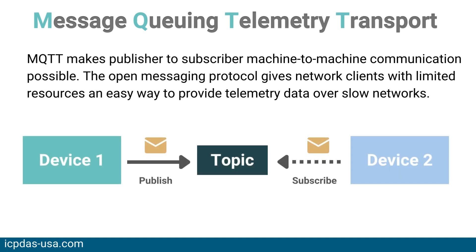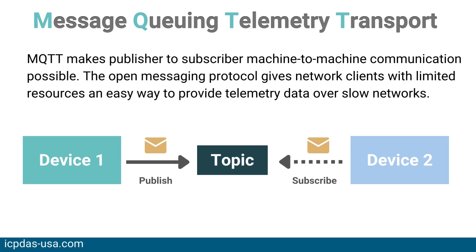Communication works on a publisher-subscriber model via a central broker. Devices publish messages about a particular subject and the message is sent to every device that has subscribed to that subject. Since neither the publishers nor the subscribers communicate with one another directly, the brokers handle the connections between them.